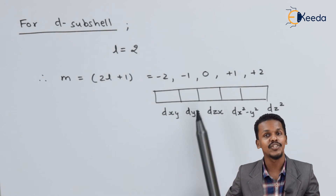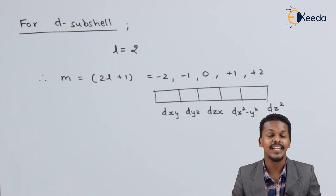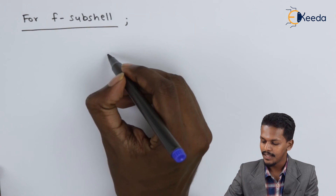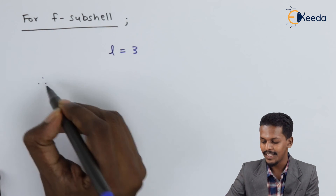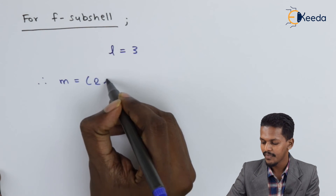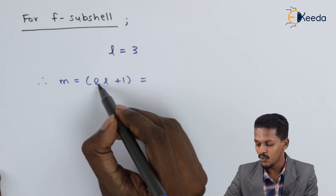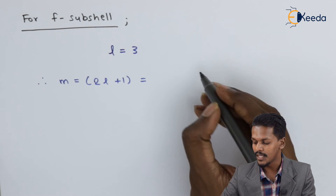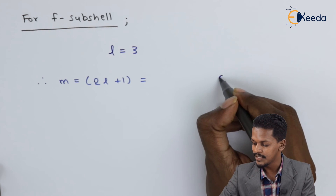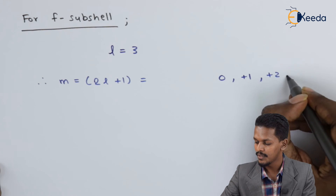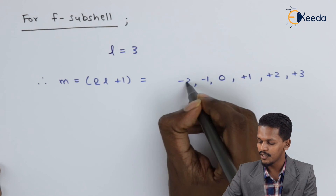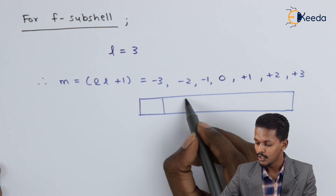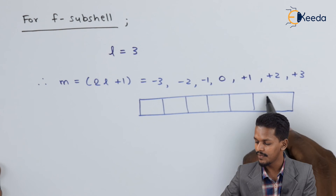Now let's talk about the F sub-shell. The azimuthal quantum number for F is L = 3. So the magnetic quantum number M = 2L + 1 = 2×3 + 1 = 7. We get seven different permissible values: 0, +1, +2, +3, −1, −2, and −3. Therefore there are seven orbitals in the F sub-shell.